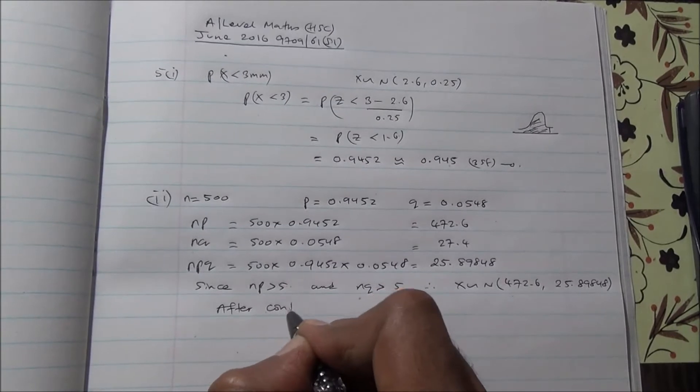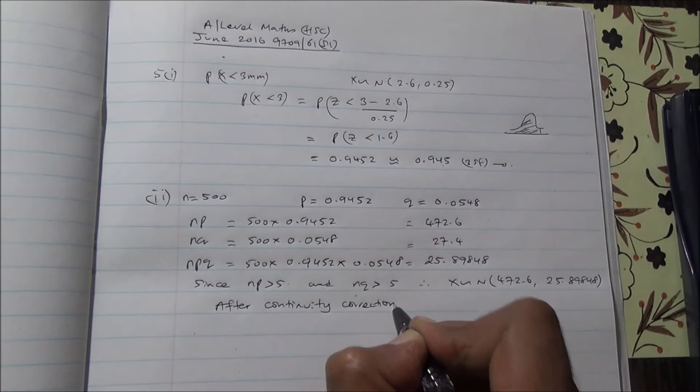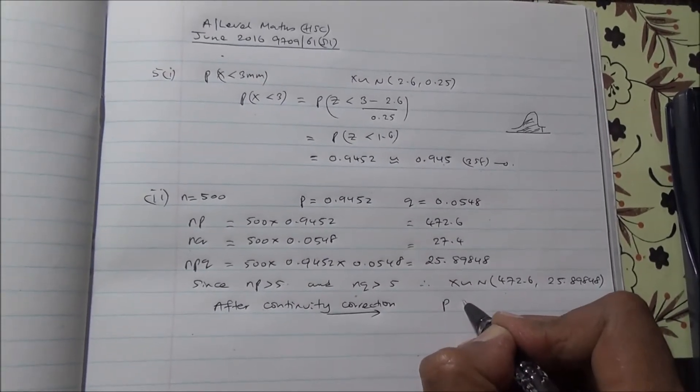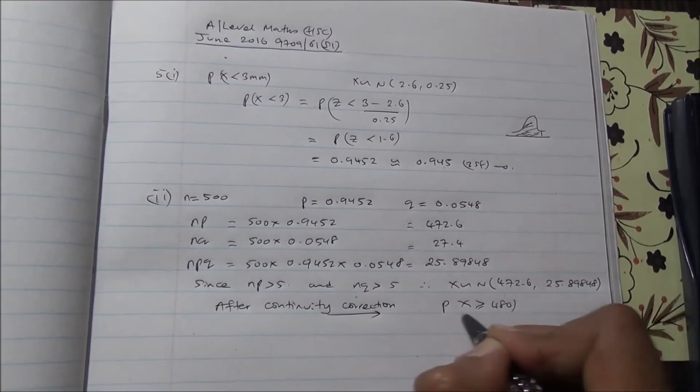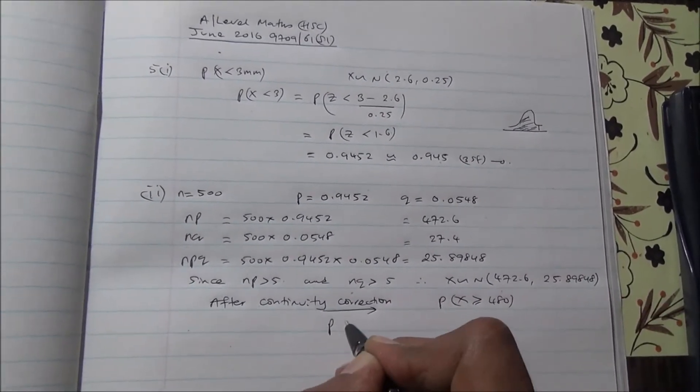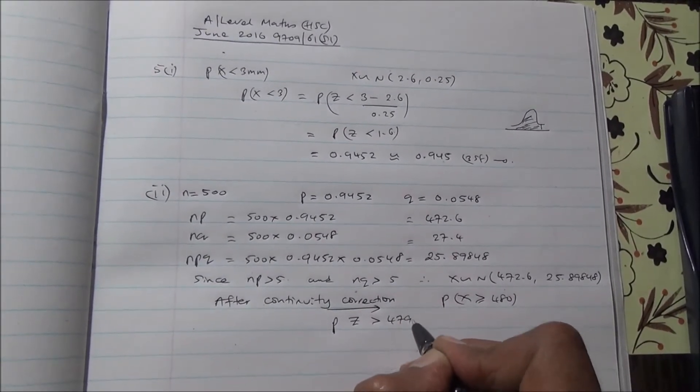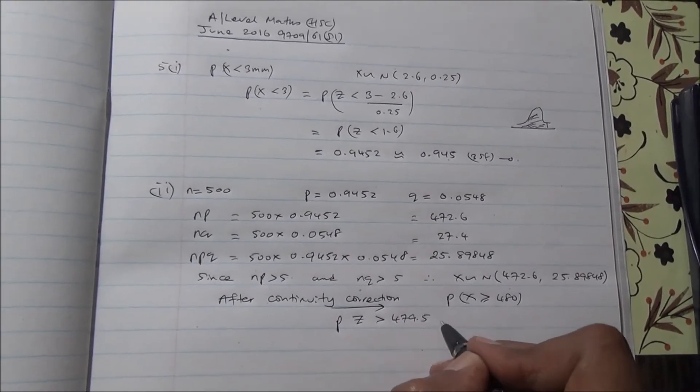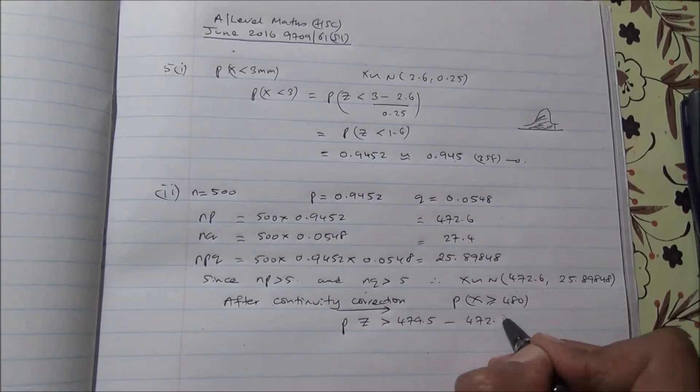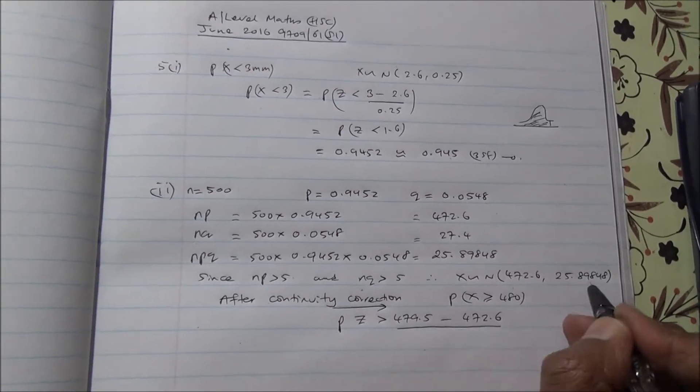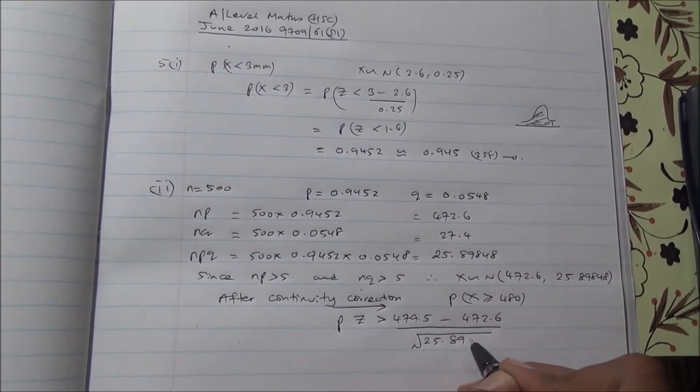After continuity correction, we're trying to find the probability of X being at least 480, so X greater than or equal to 480. That means probability of Z being greater than 479.5 - we're doing the continuity correction - minus the mean μ = 472.6, over the standard deviation, root of 25.89848.